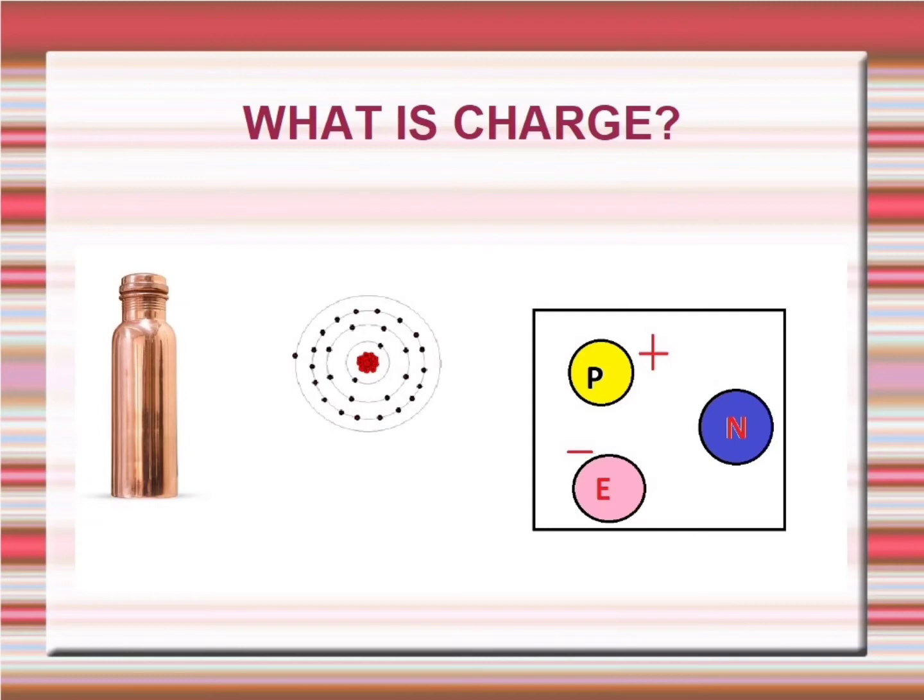Here we can see how one atom looks like. All atoms are composed of protons, electrons, and neutrons.